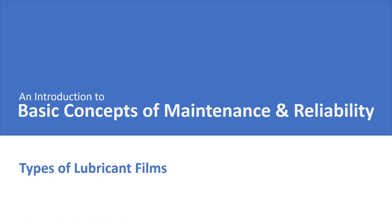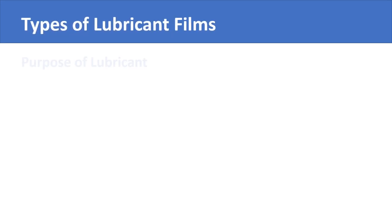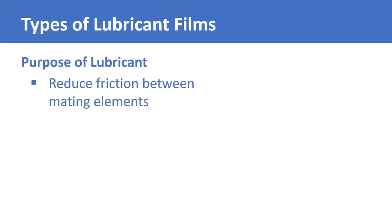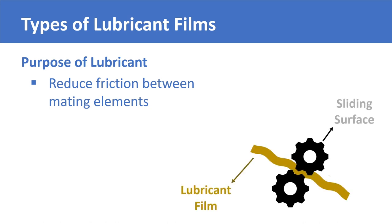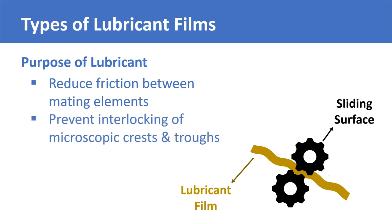The purpose of a lubricant is to reduce friction between mating elements or components of a machine. This is achieved by a film of lubricant holding itself between the sliding surfaces. The lubricant prevents the interlocking of microscopic crests and troughs of the two surfaces and allows for smooth sliding, reducing wear and tear.